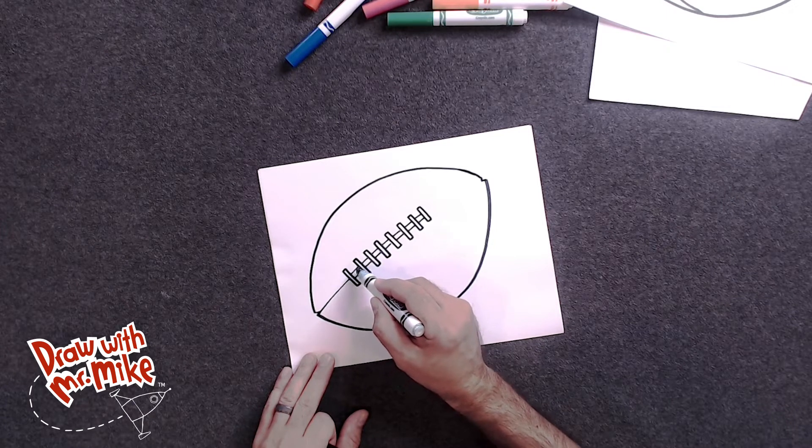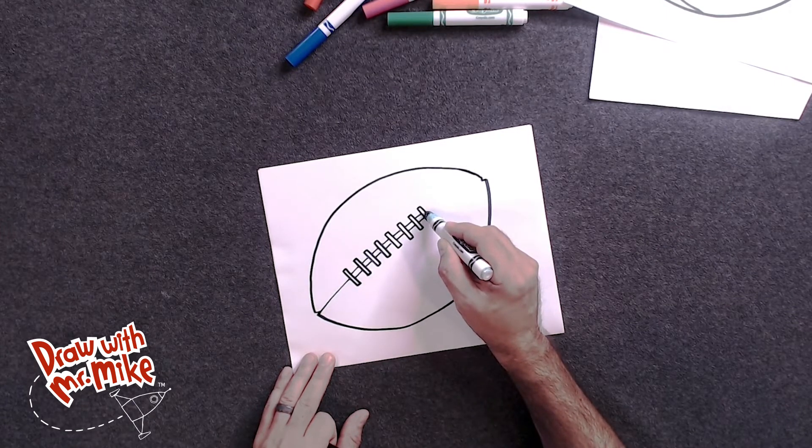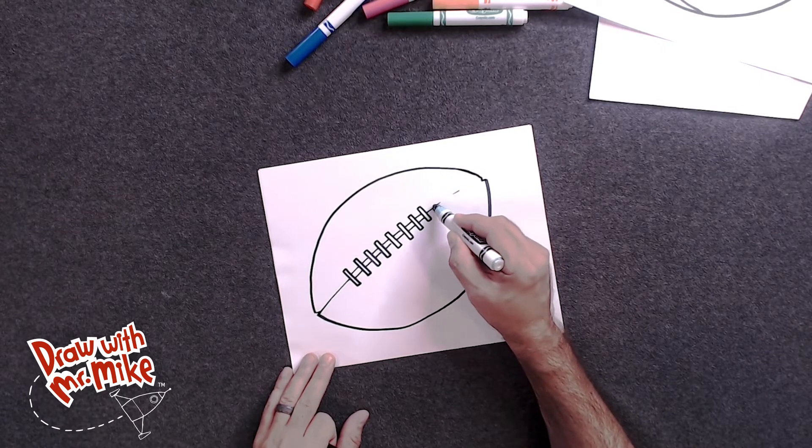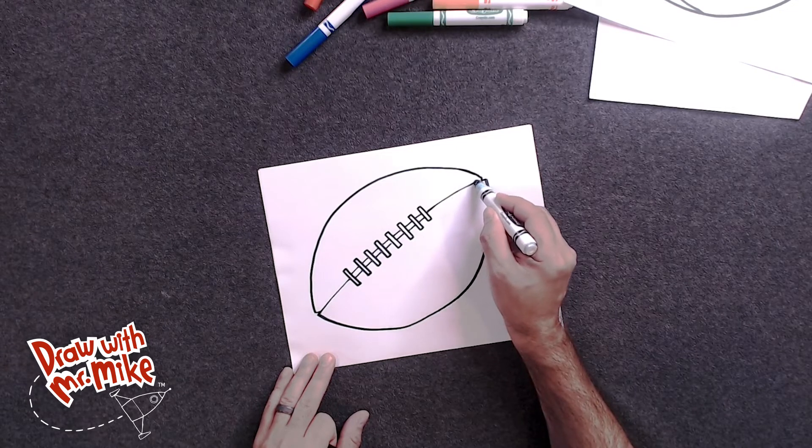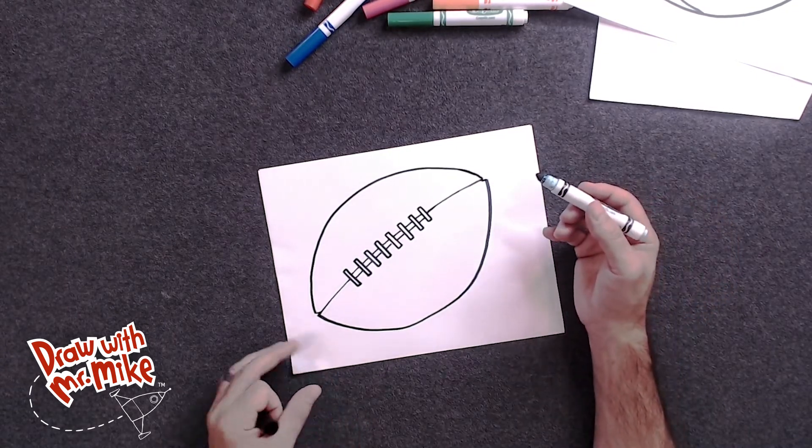And then we're going to lift our marker. We're not drawing. And then we're going to start here. And then we're going to continue that arc all the way over, all the way over to that point on the end. And that looks like a football.